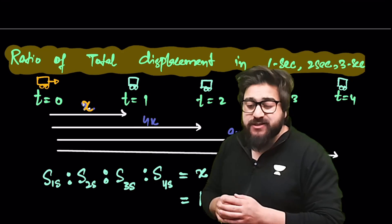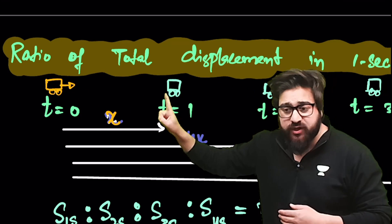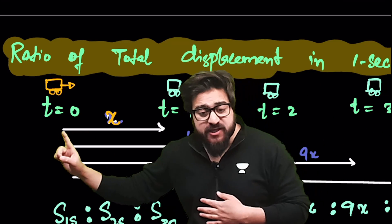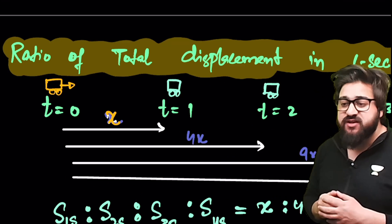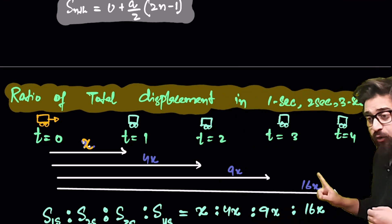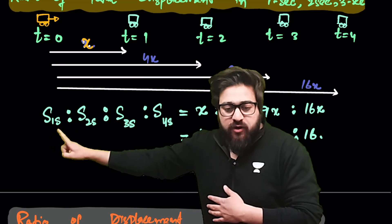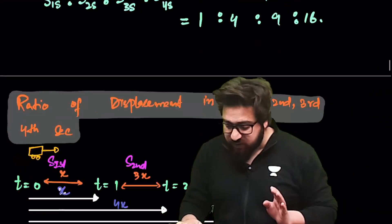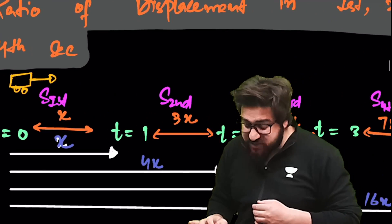An important concept is the ratio of total displacement in 1 second, 2 seconds, 3 seconds, and so on. If a car starts from rest, displacement in 1 second is x, in 2 seconds is 4x, in 3 seconds is 9x, in 4 seconds is 16x. So the ratio of total displacements is: 1 : 4 : 9 : 16 — that is, proportional to the squares of time.